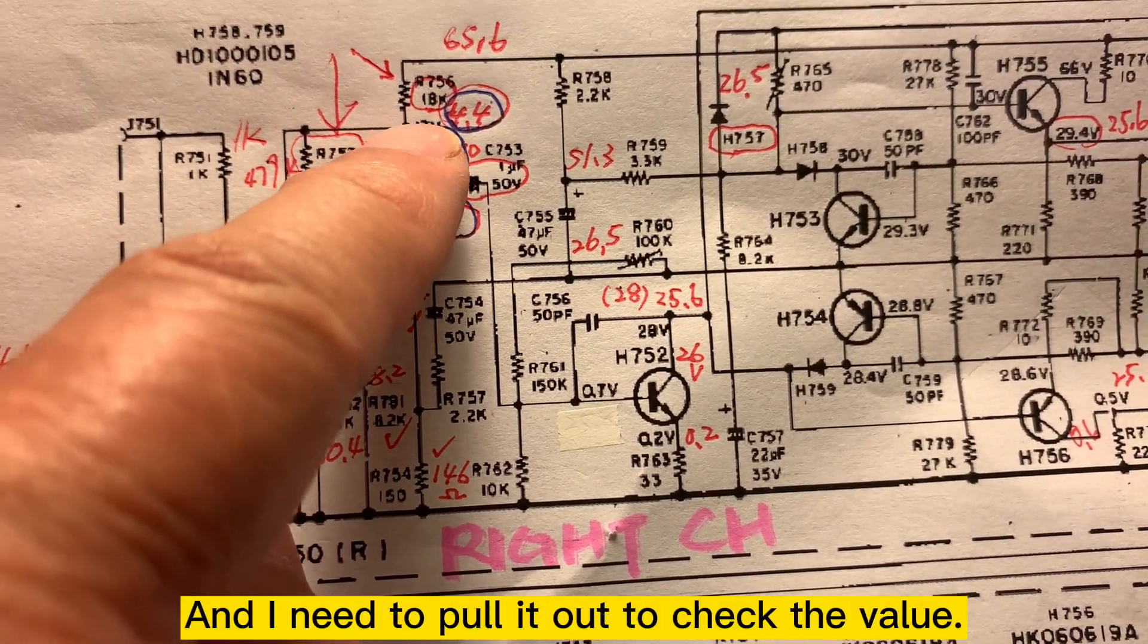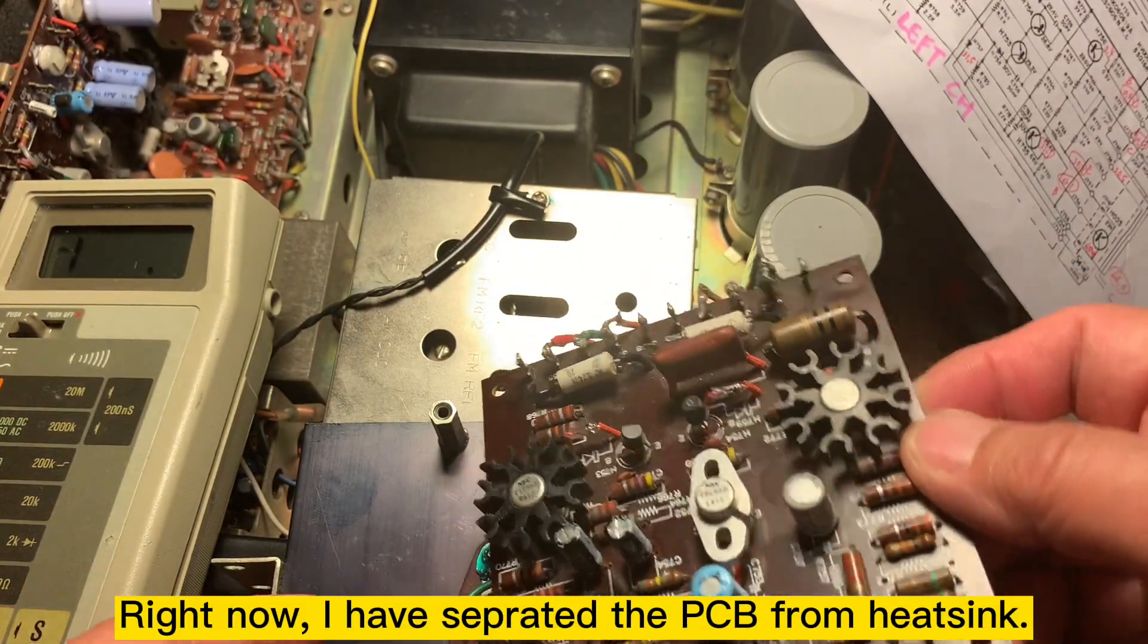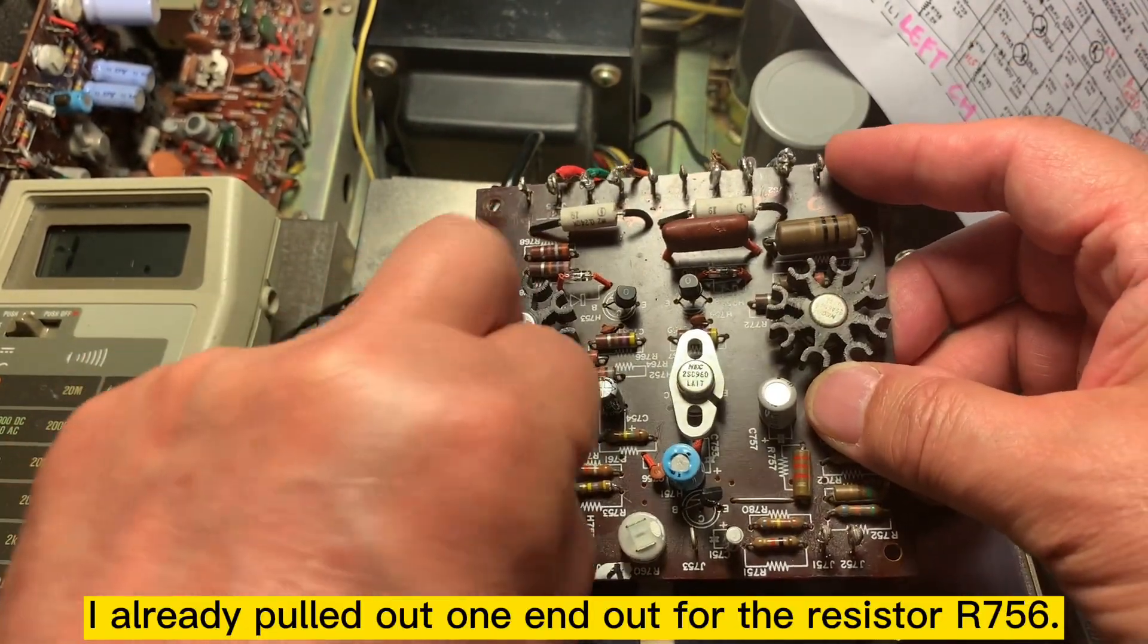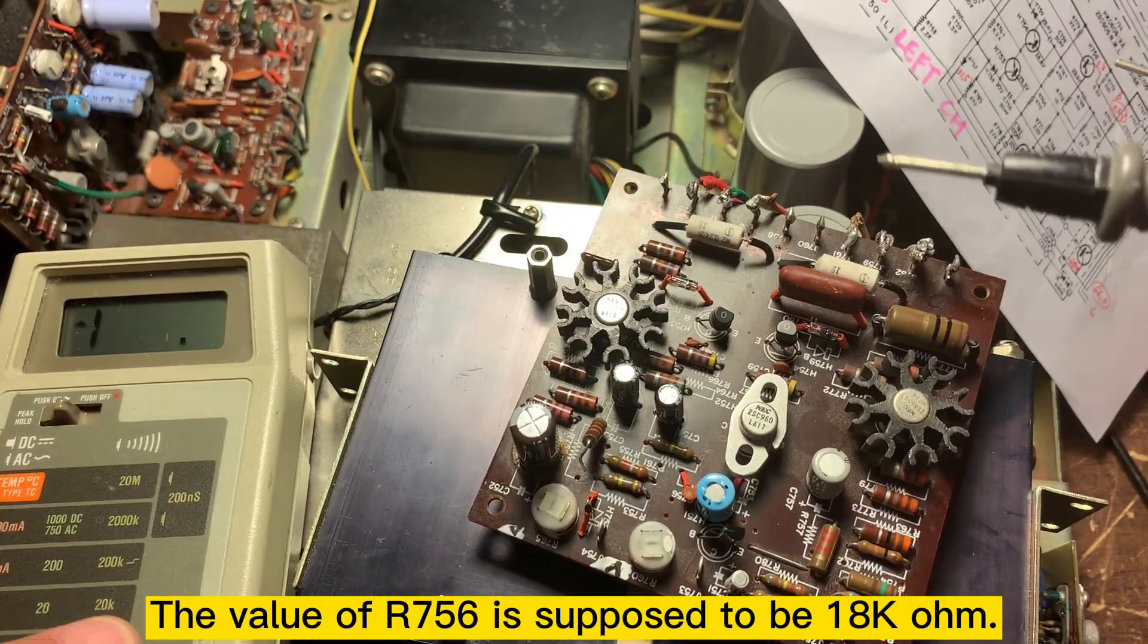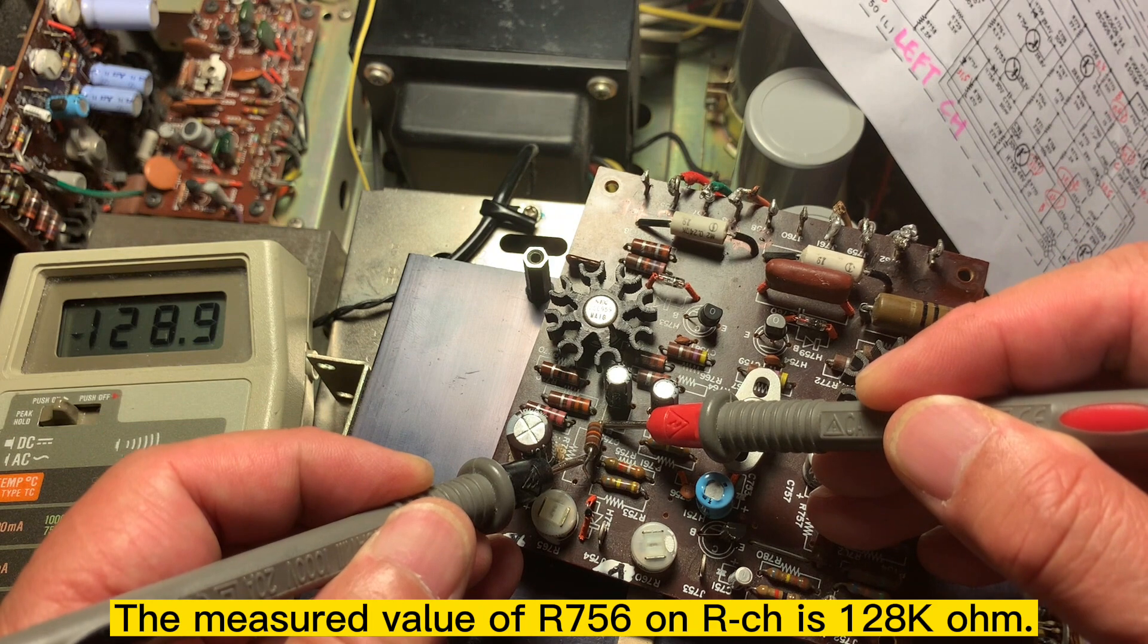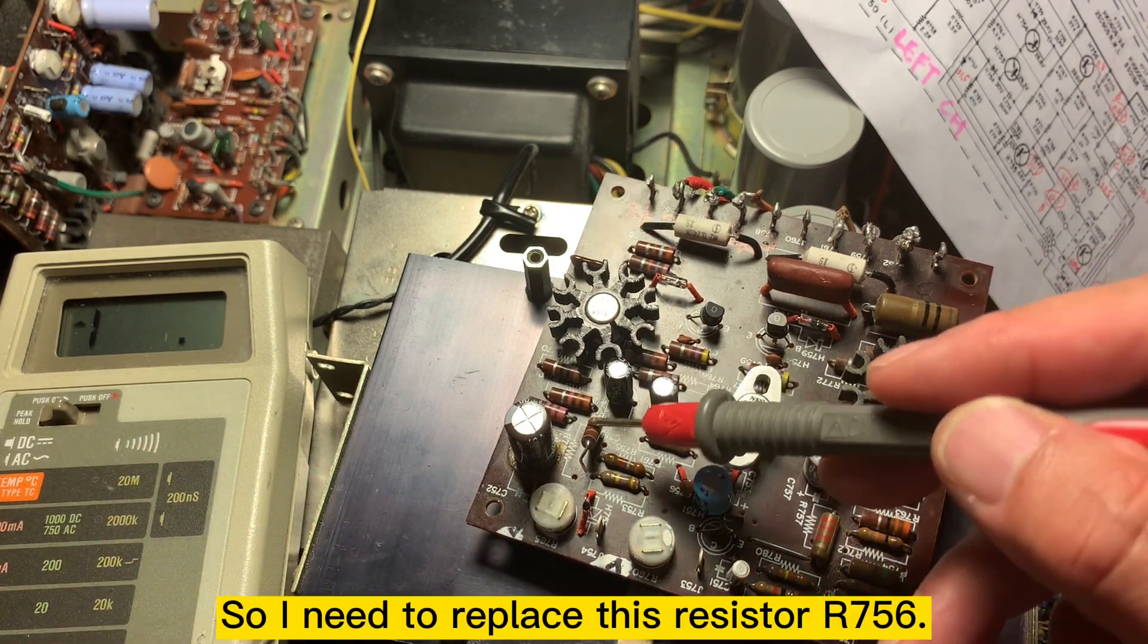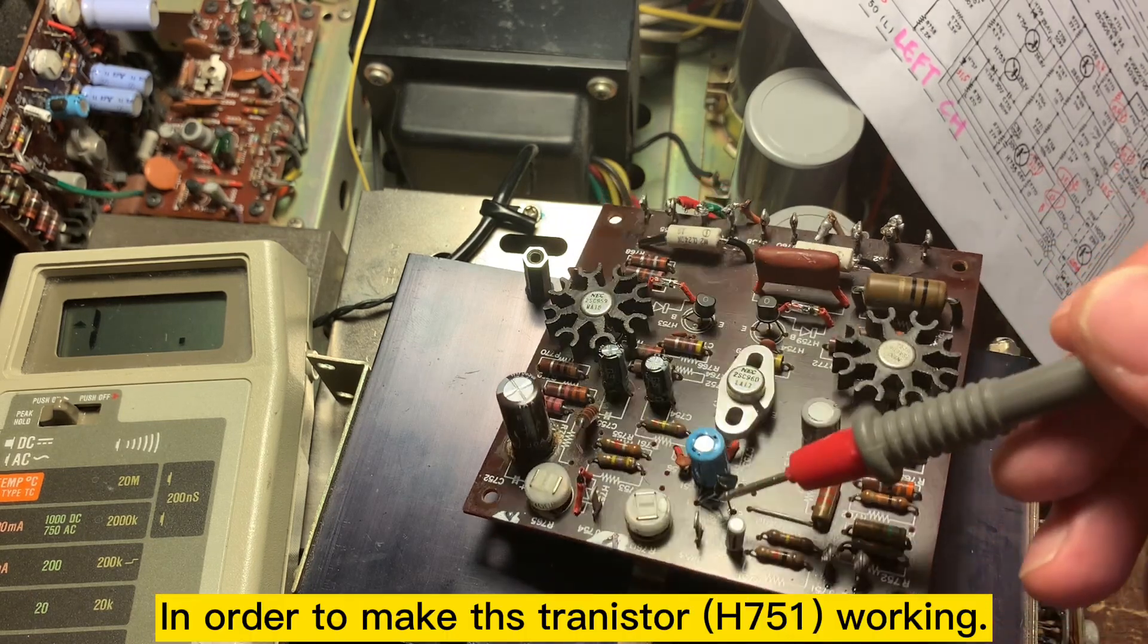So I assume this resistor may be defective, so I'm going to take it out to check. Right now I already took out this PCB and I already pulled out this resistor here. So this is supposed to be 18K. And I show 128K, which is too high. That's why the voltage is so low. So I need to replace this resistor in order to make this transistor working.